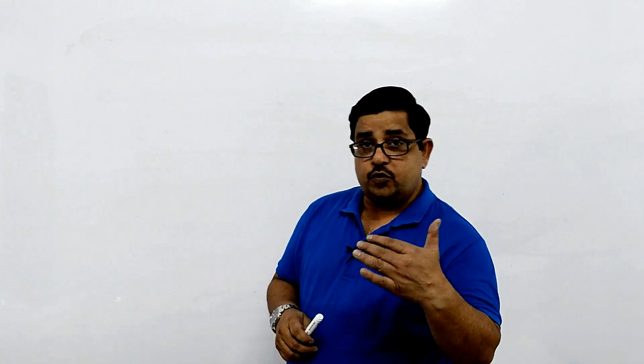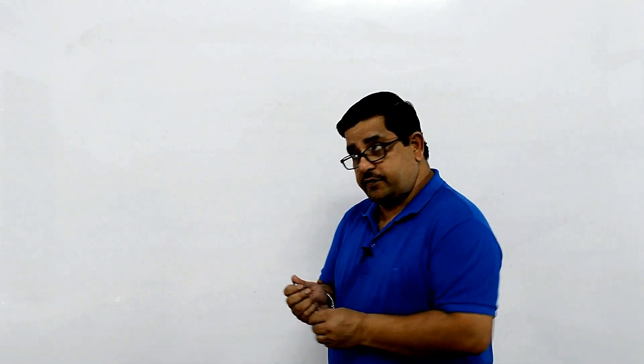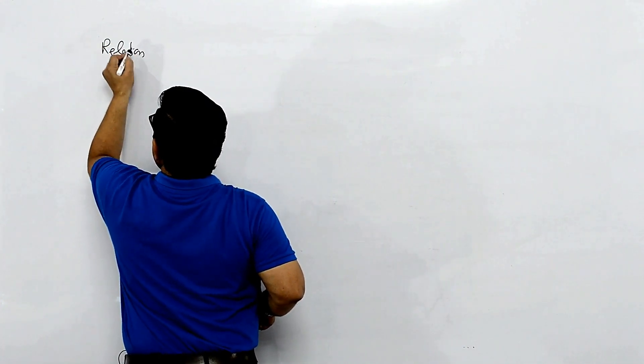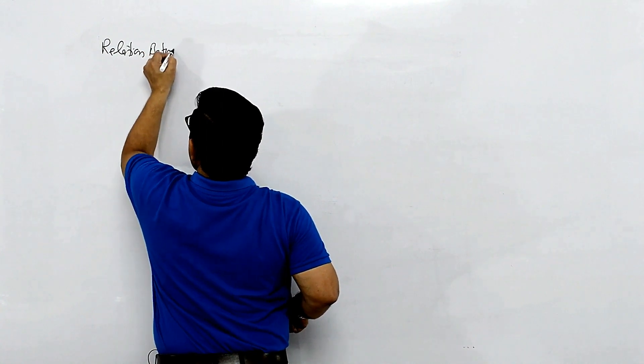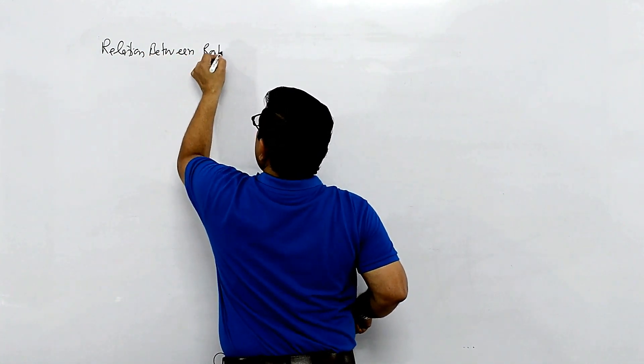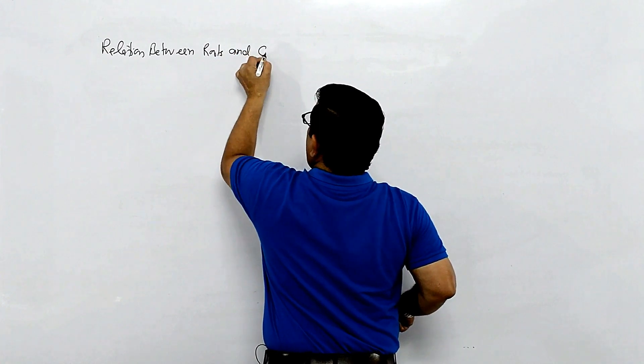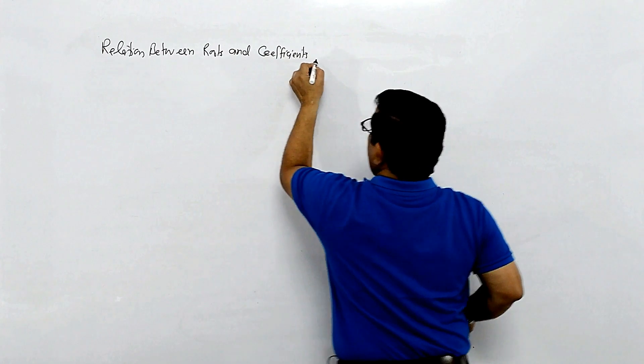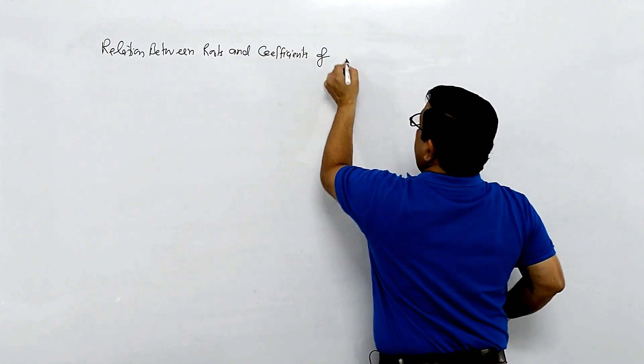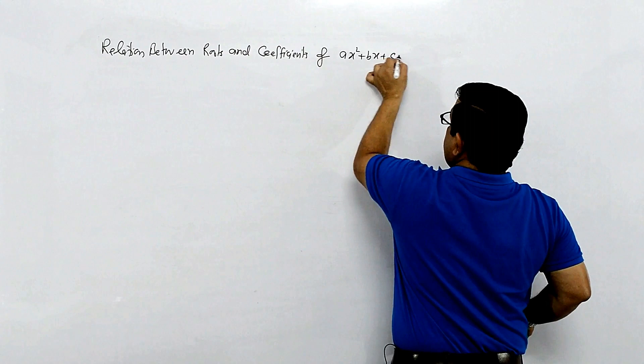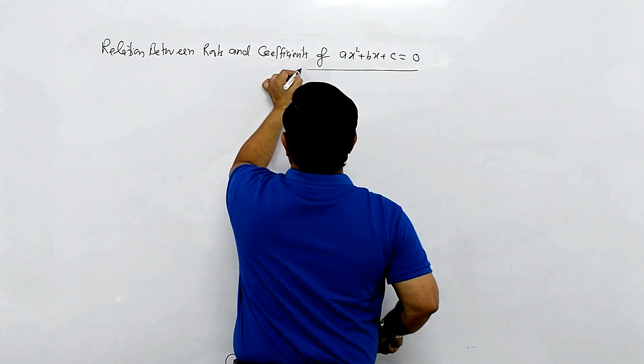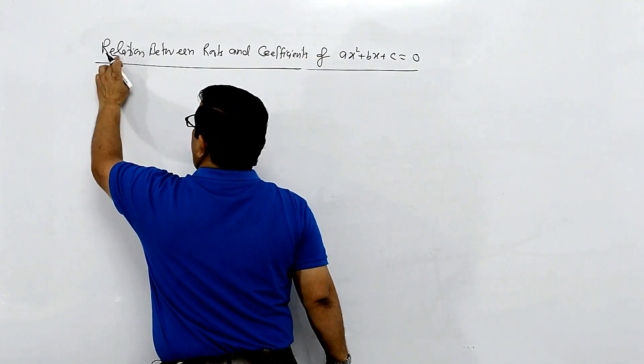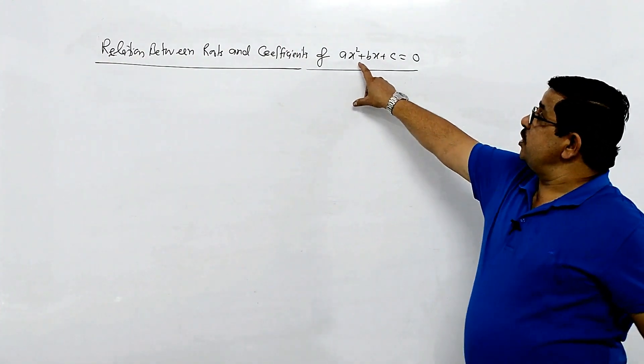This video covers the relation between roots and coefficients of a quadratic equation. The relation is between roots and coefficients of ax square plus bx plus c equal to zero. This is the given quadratic equation and we have to find out the relation between the roots and the coefficients of this quadratic equation.